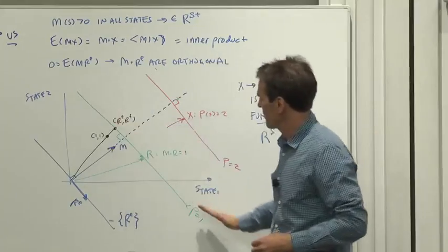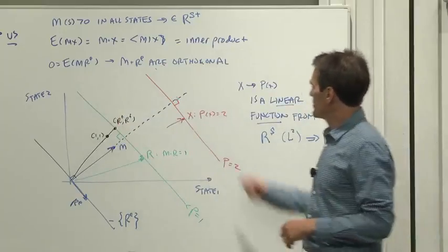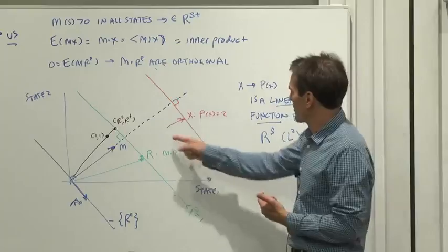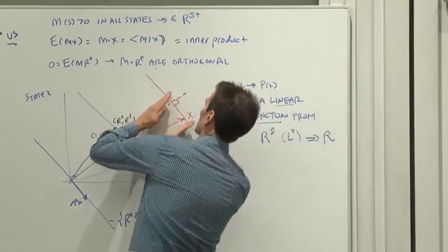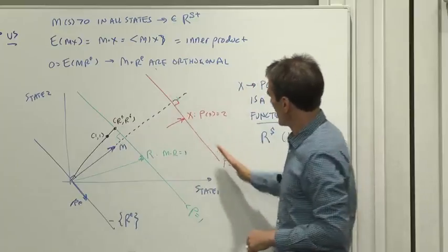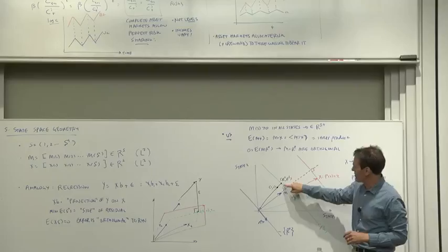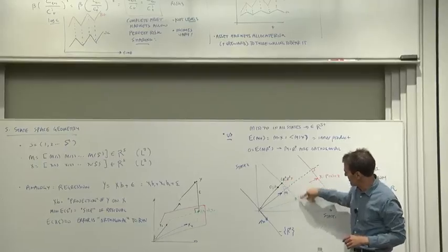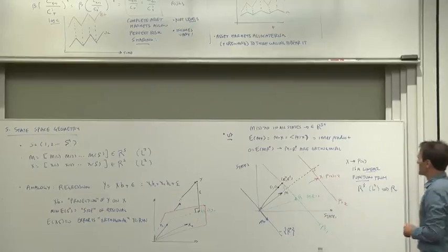Similarly, where's all the price two objects? Well, all the price two objects are vectors whose inner product with m is 2, and therefore they all lie on that plane there. RF, of course, is the point on the price one where the two values are the same in both states of nature.